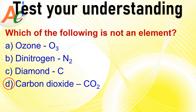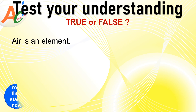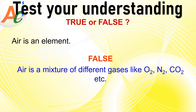Elements are substances made up of only one type of atom, whereas compounds consist of two or more different types of atoms chemically bonded together. In this case, carbon and oxygen are different elements, so carbon dioxide is a compound, not an element. Now, state whether the following statement is true or false: 'Air is an element.' It is a false statement because air is a mixture of different gases like O2, N2, CO2, etc.